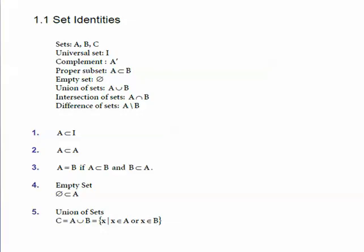Tricks on set theory. First of all, set identities: sets are A, B, C; universal set is I; complement is A'. Proper subset: A is a subset of B. Empty set is also known as null set, that is φ. Union of sets is given by A union B, intersection is given by A intersection B, and difference of sets is given by A minus B. Some basic identities: A is always a subset of universal set I, and A is always a subset of itself. If A is a subset of B and B is a subset of A, then A equals B. Empty set φ is always a subset of any set A or B.